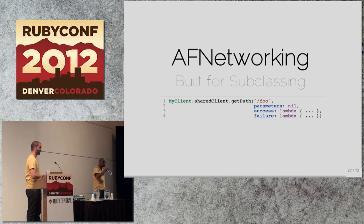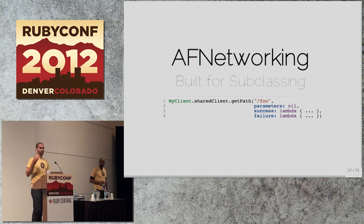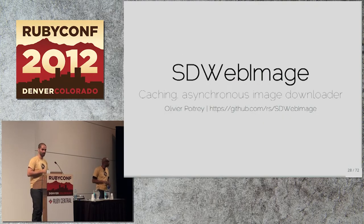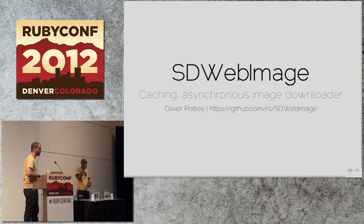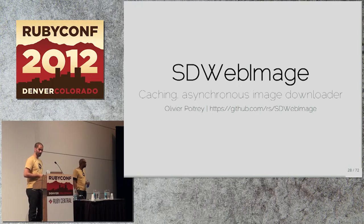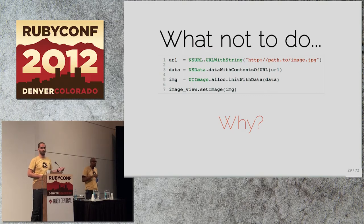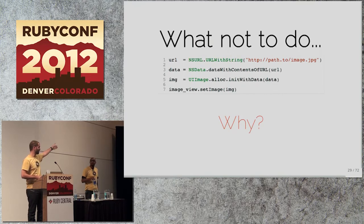The second library I want to talk about is SDWebImage — a caching asynchronous image downloader. When I first wrote a RubyMotion app with a table view containing images loaded from S3 URLs, I used a synchronous approach — which is exactly what you're not supposed to do.